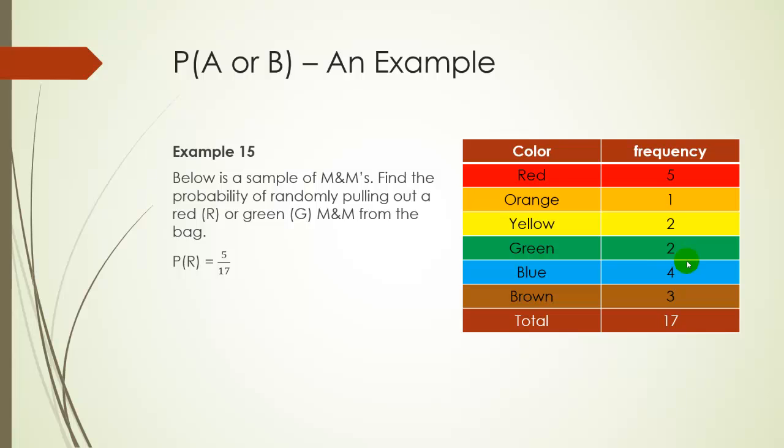But another way to look at this, there's 5 red M&Ms, so there's a 5 out of 17 chance to get red. There's a 2 out of 17 chance to get green. Add those together, we get a 7 out of 17 chance of getting red or green.